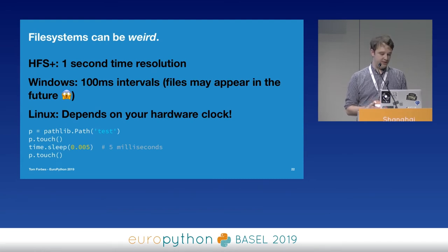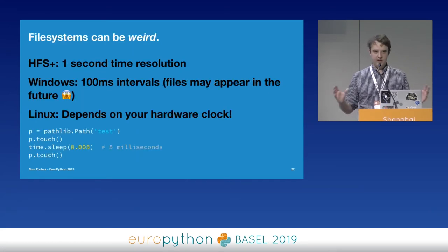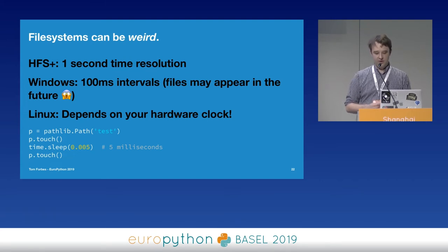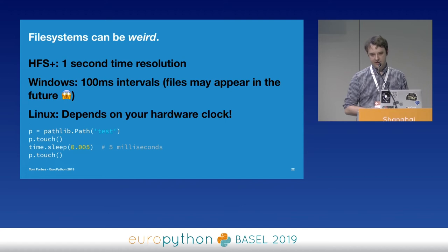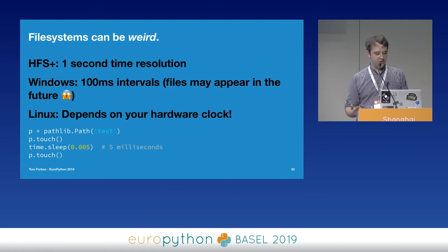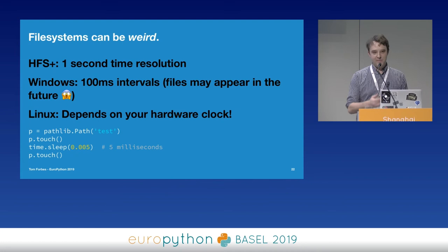File systems can be weird. HFS, the default file system on macOS before the latest version, had a one-second time resolution — no nanoseconds. Windows has 100-millisecond intervals, so files may appear to be in the future. On Linux it depends on your hardware clock — the current time in the Linux kernel is cached in memory and updated every 10 milliseconds normally. Python does a great job abstracting OS specifics away, but you can't escape from the realities of the file system you're running on.